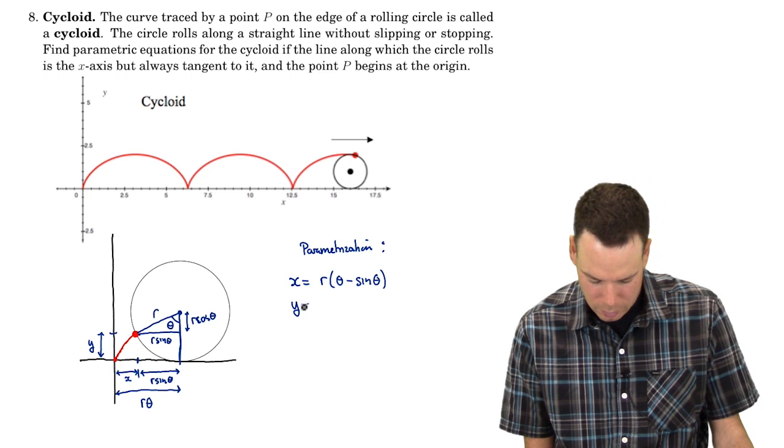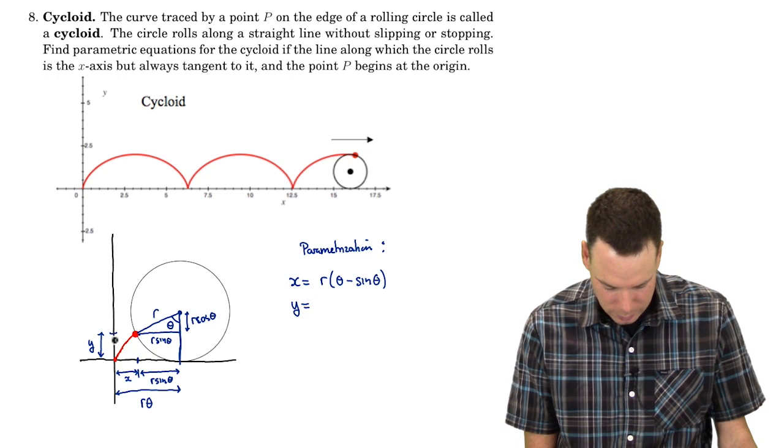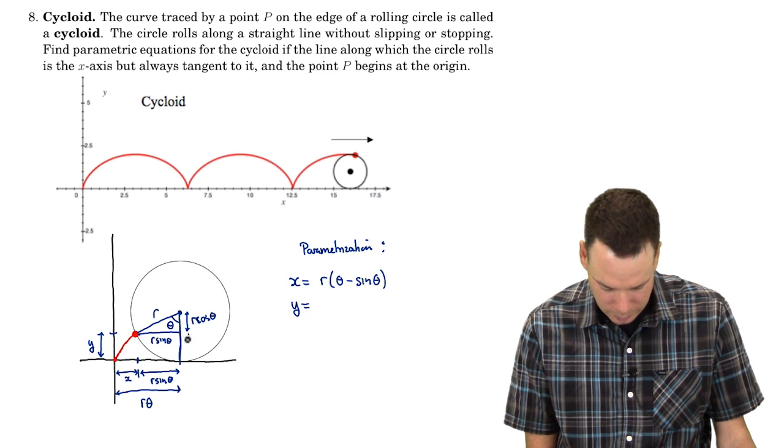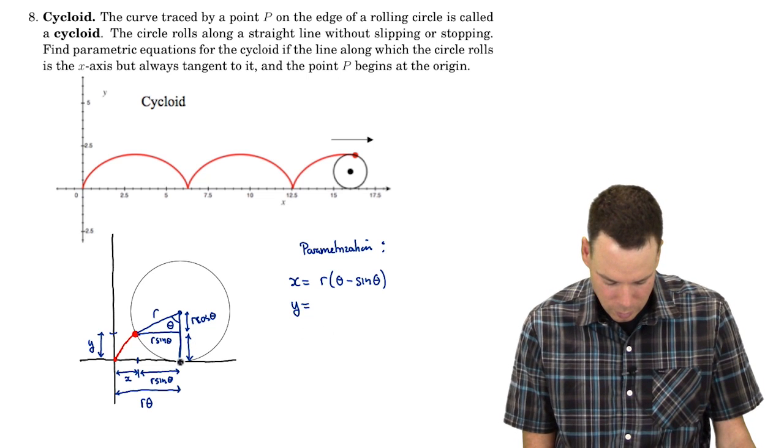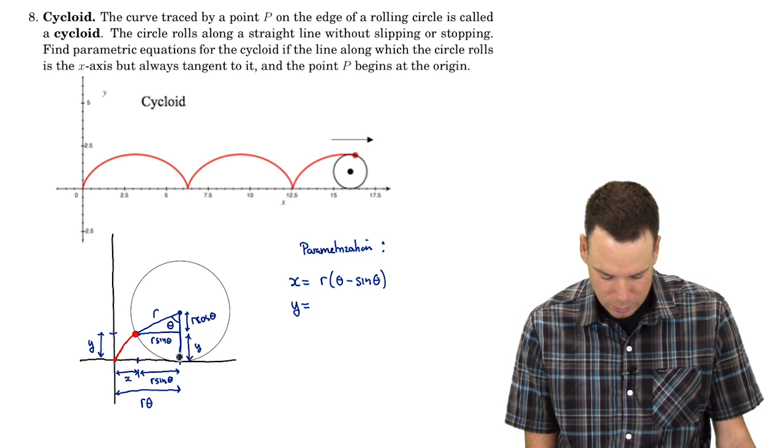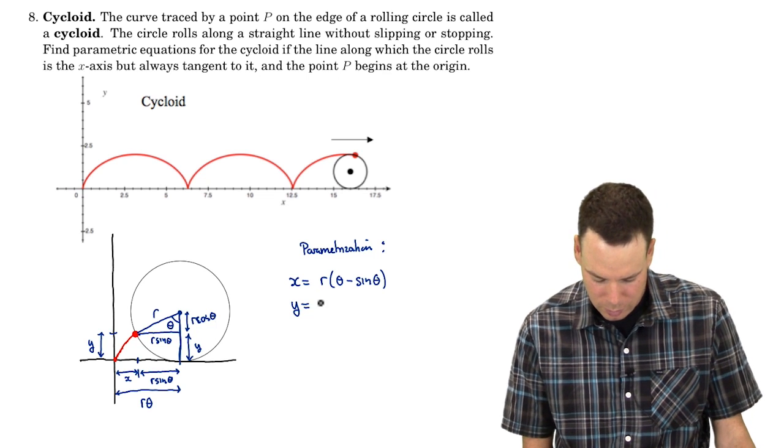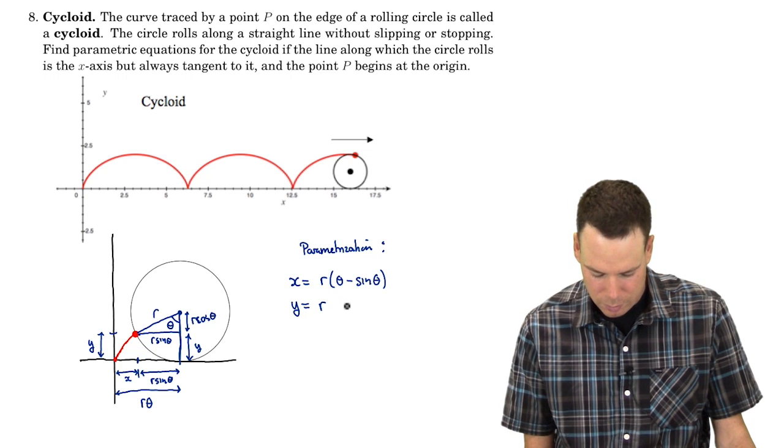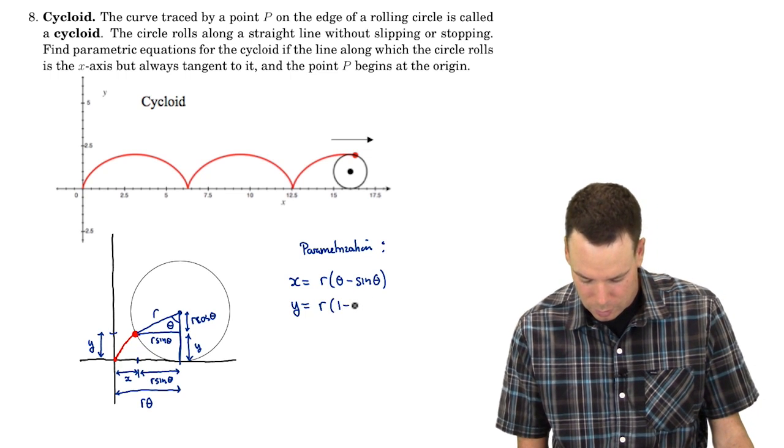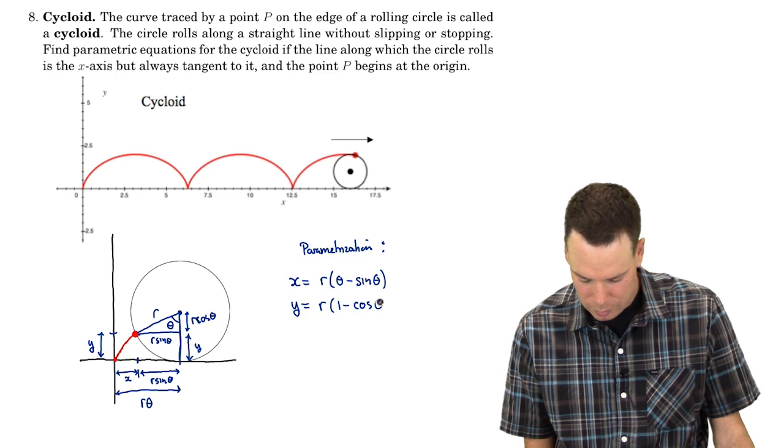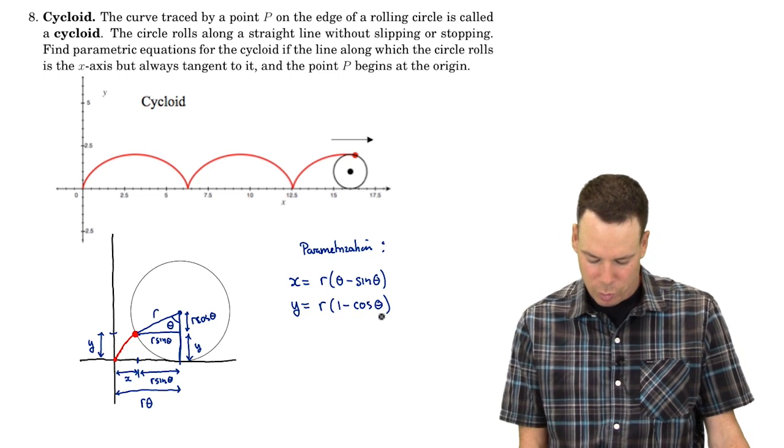What is y? y is this height here, which is this length here. What is that value? So that's y there. Well, it's the radius of the circle minus r cos theta. So it's r minus r cos theta. I can factor out the r and I get r times 1 minus cos theta. And so there's our parametrization.